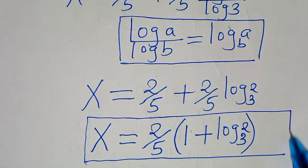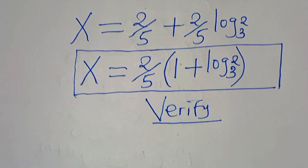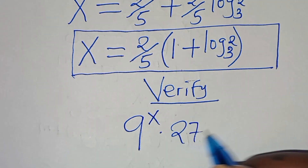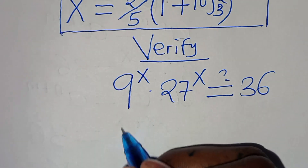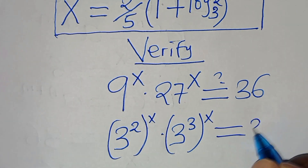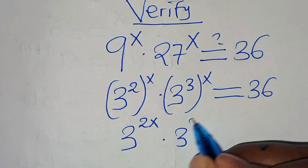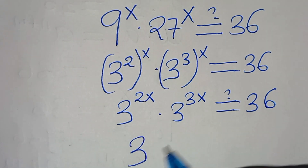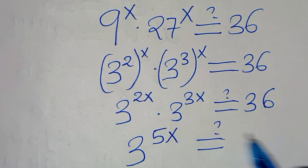Now let's verify that this value of x satisfies the equation. We have 9 to the power of x times 27 to the power of x, which should equal 36. Expressing 9 as 3² and 27 as 3³, this becomes 3^(2x) times 3^(3x), which equals 3^(2x+3x) = 3^(5x), and this should give us 36.